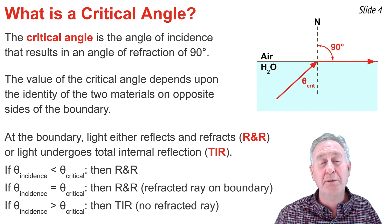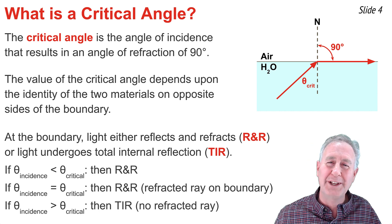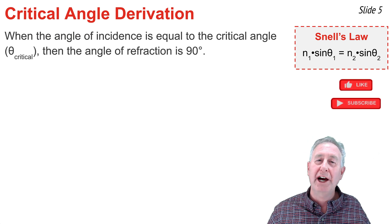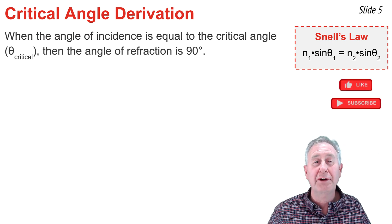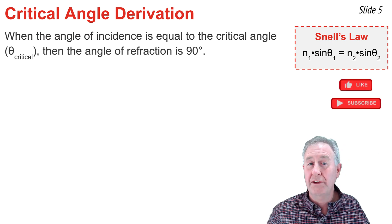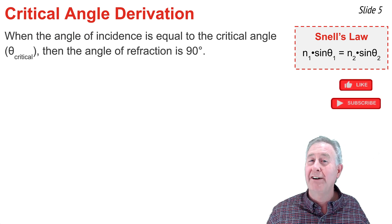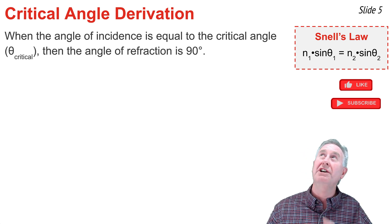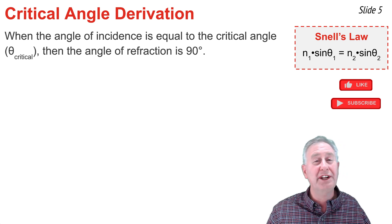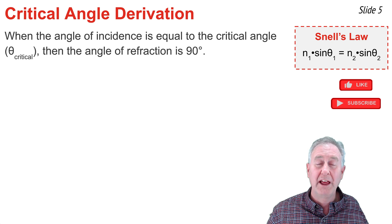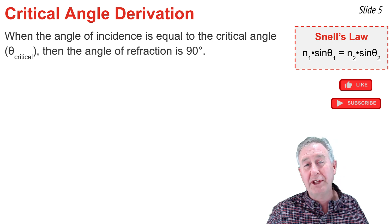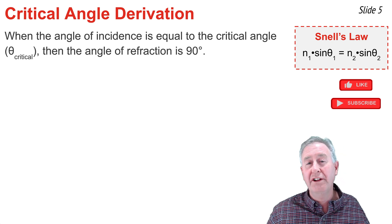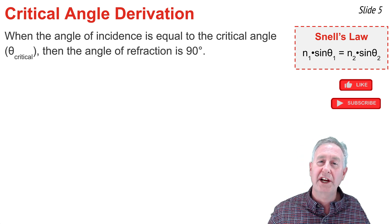The question becomes: how do you calculate the critical angle? The answer is with a formula — one that is quite easy to derive using Snell's law and the definition of the critical angle. When the angle of incidence equals the critical angle, the angle of refraction is 90 degrees.